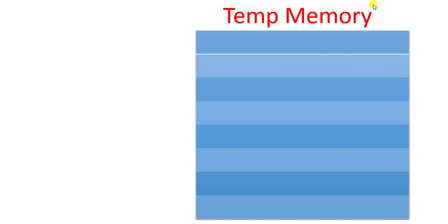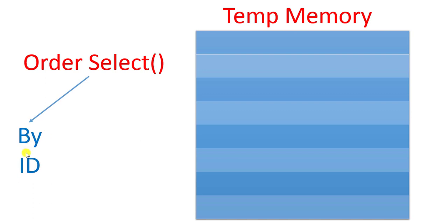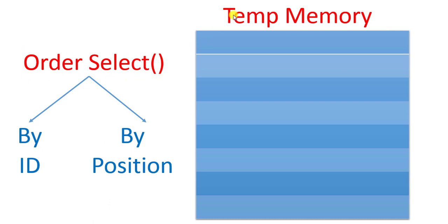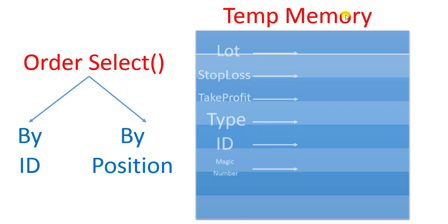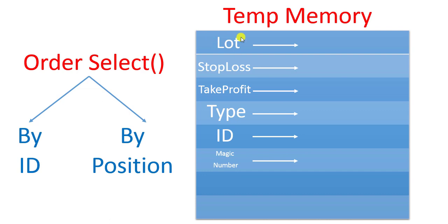The first important thing to remember is that we have a temporary memory. When we select the order — whether by ID or by position — all the data of the order is saved in this temporary memory, including its lots, stop loss, take profit, type, ID, magic number, and so on.